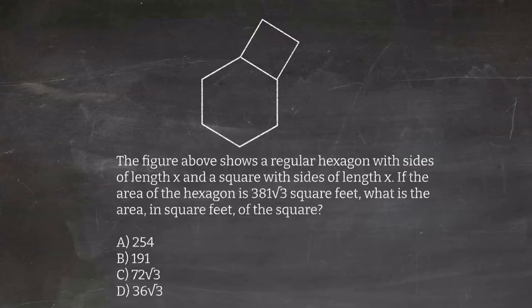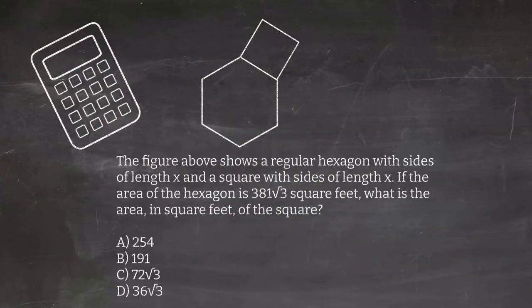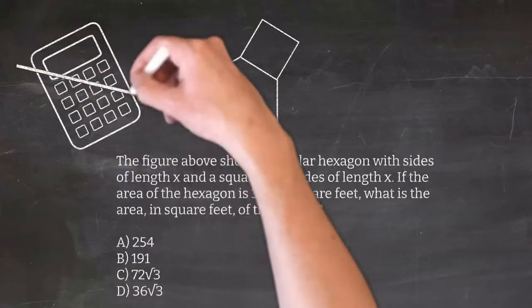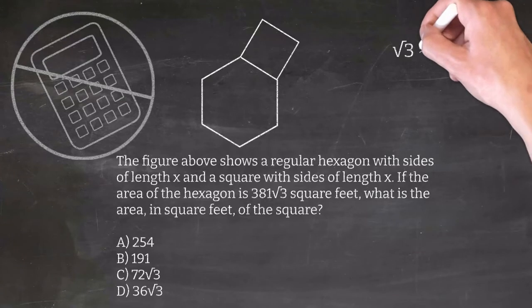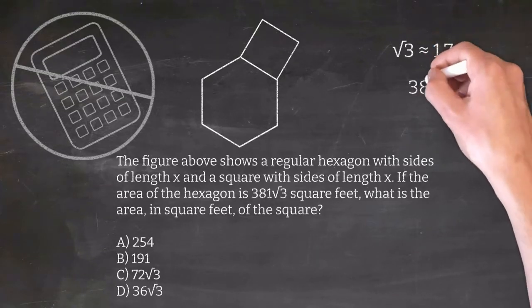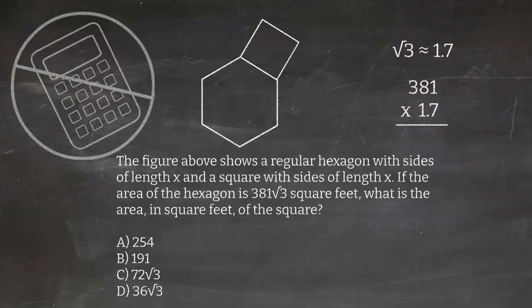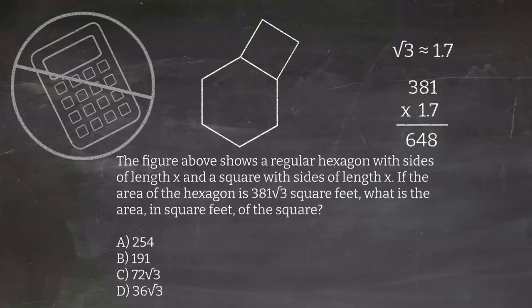This is the calculator section, so I recommend letting the calculator do the heavy lifting work here. If this problem were presented on the no calculator section, I would simply estimate the square root of three to be approximately 1.7 and do out the math on paper to get an approximation. It seems like it's going to come out to equal approximately 648-ish. We don't have to be perfect.